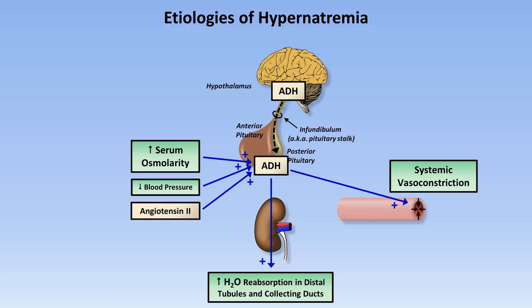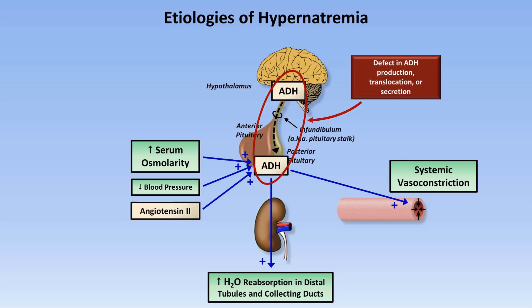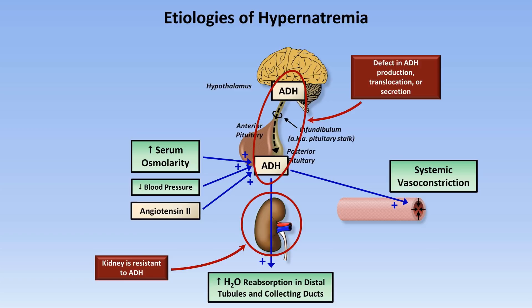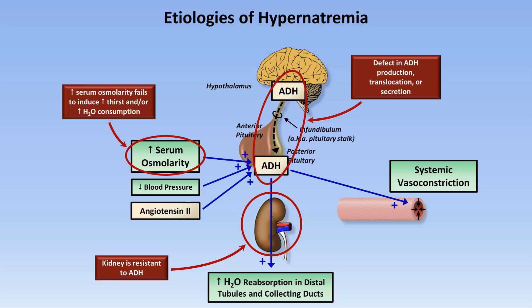The etiologies of hypernatremia map to one of three problems with this system. First, there can be a defect in the production, translocation, or secretion of ADH — this is called central diabetes insipidus. There can be a problem in the kidney where the kidney is resistant to the actions of ADH — this is called nephrogenic diabetes insipidus. And last, an elevated serum osmolarity can fail to induce increased thirst and or increased water consumption. Normally, even the slightest degree of hypernatremia triggers the thirst mechanism, but in some people this response does not occur.